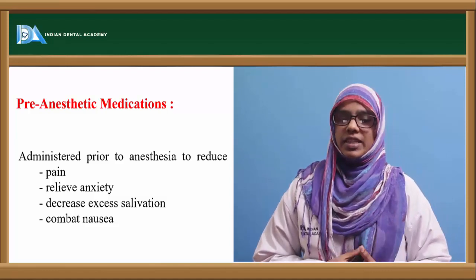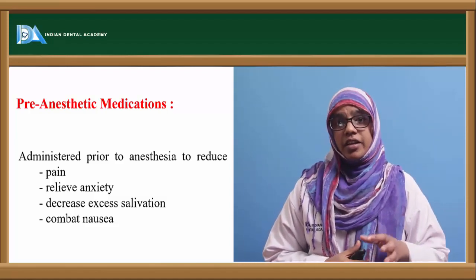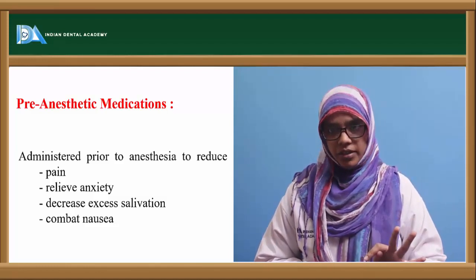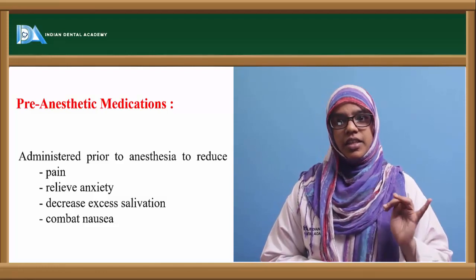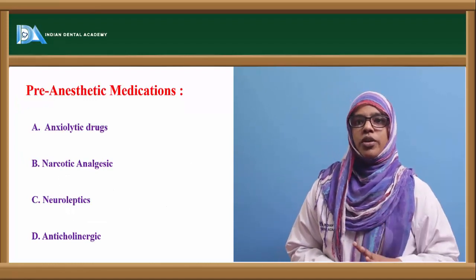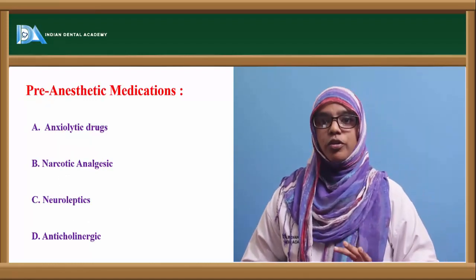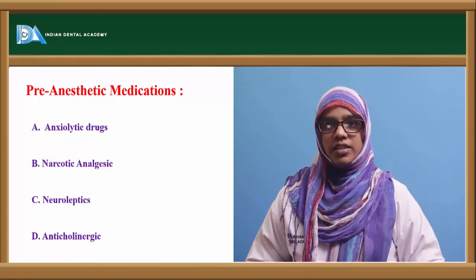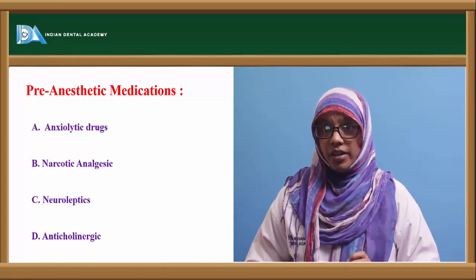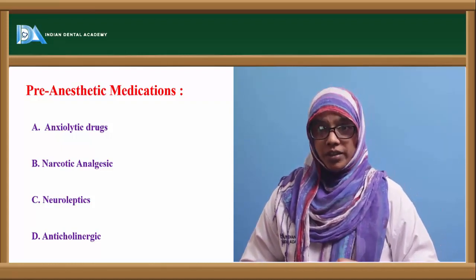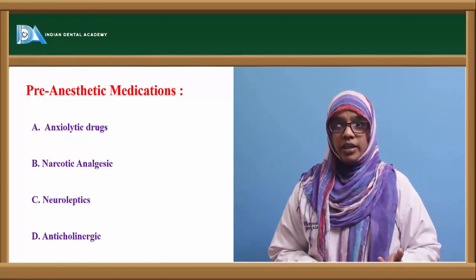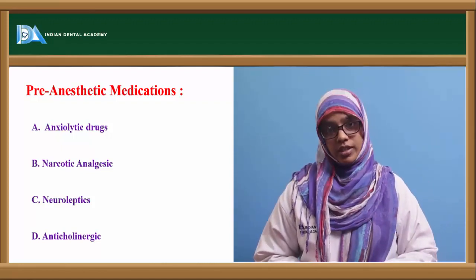Pre-anesthetic medications are administered prior to anesthesia to achieve four main goals: decrease pain, relieve anxiety, decrease excessive secretion, and combat nausea. They are broadly grouped into four categories: anxiolytic drugs that produce sedation and decrease anxiety, such as diazepam and midazolam; narcotic analgesics that decrease pain, like morphine and fentanyl; neuroleptics such as promethazine that are antiemetic; and anticholinergics like scopolamine that decrease secretion and cause bronchial dilation.